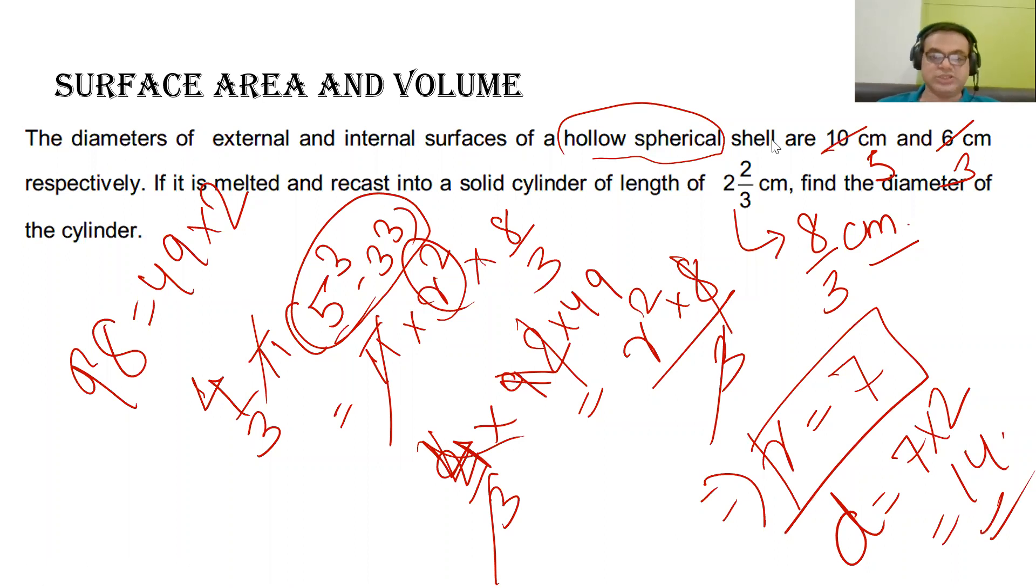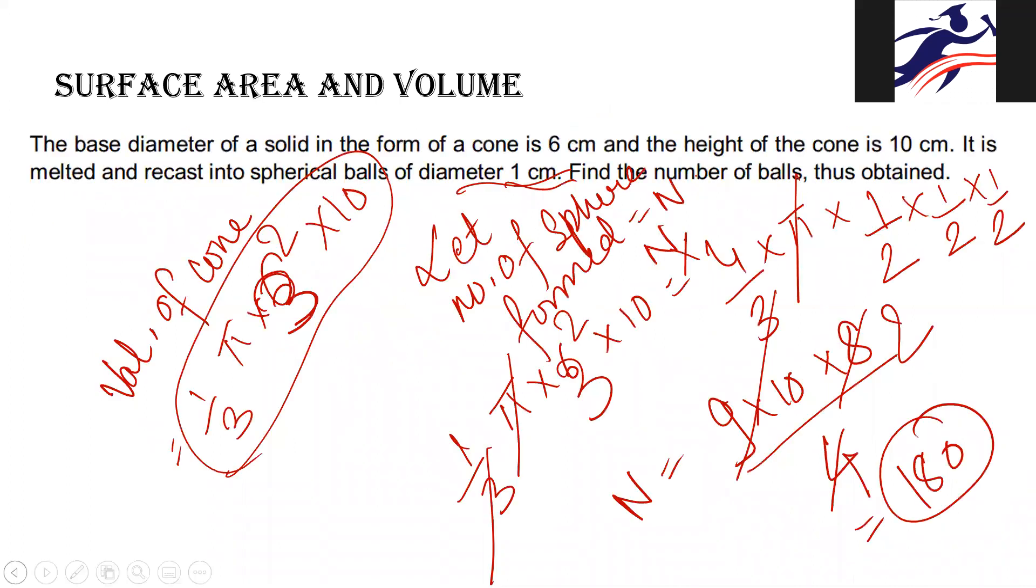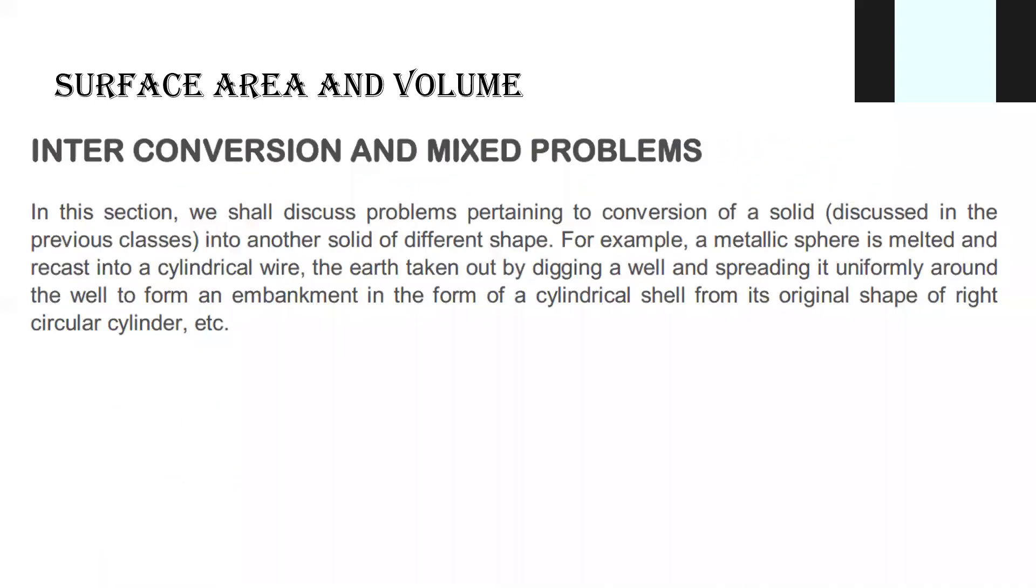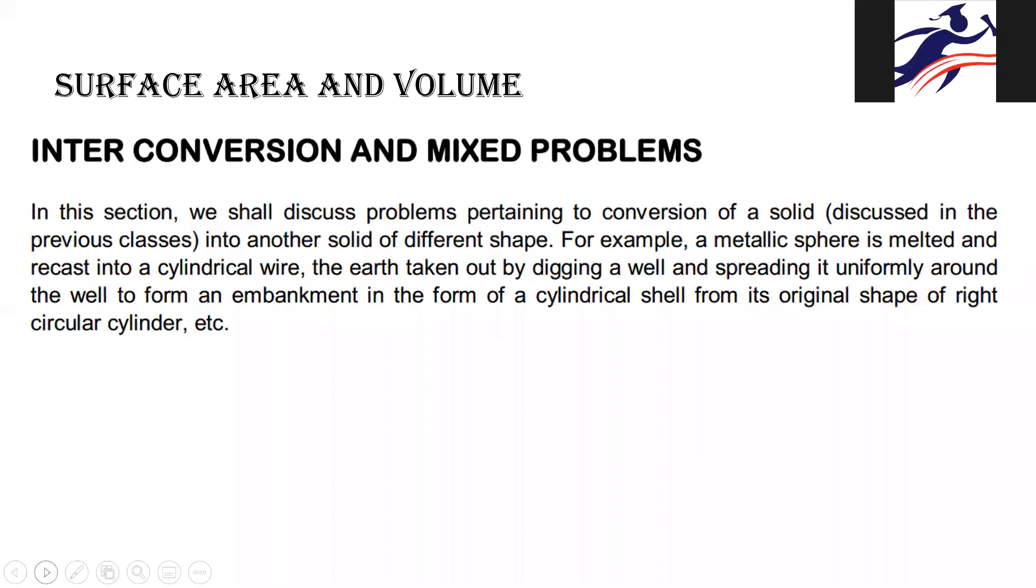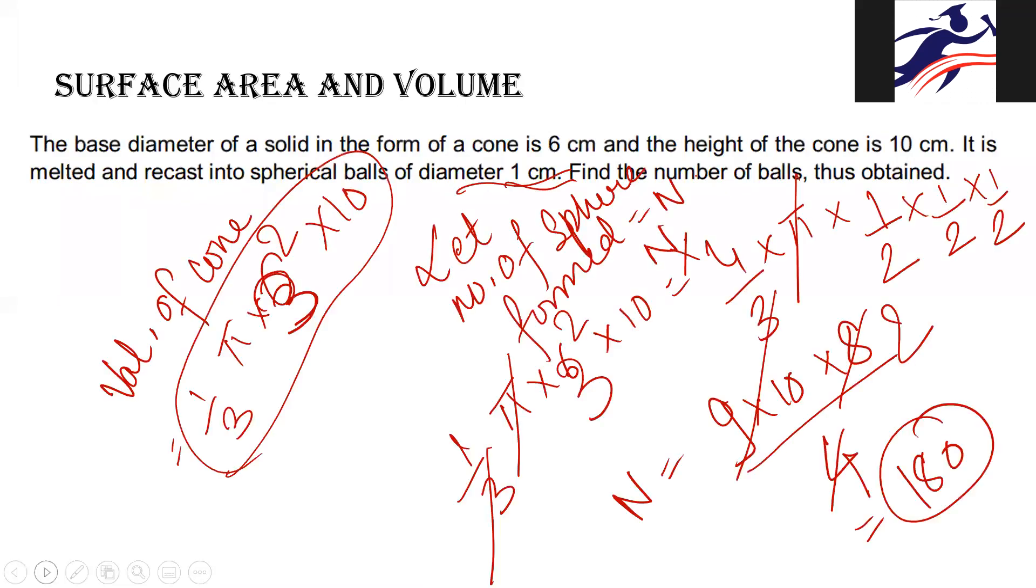Sir, in the previous question, they have given that the volume of the cone is 30 centimeter cube, and I don't understand how they have given it, the volume is calculated 30 centimeter cube. What is the need to calculate the volume of the cone, one by three pi into three square into 10 centimeter cube? So what is the need? Maybe it is an error there.